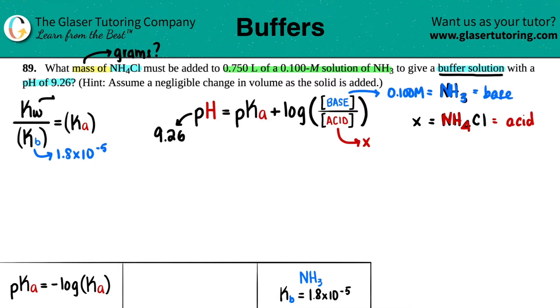The Kw at room temperature is 1 times 10 to the negative 14th, and the Kb value we looked up is 1.8 times 10 to the negative fifth. So 1.0 times 10 to the negative 14th divided by 1.8 times 10 to the negative fifth gives us a Ka value of 5.56 times 10 to the negative 10th.